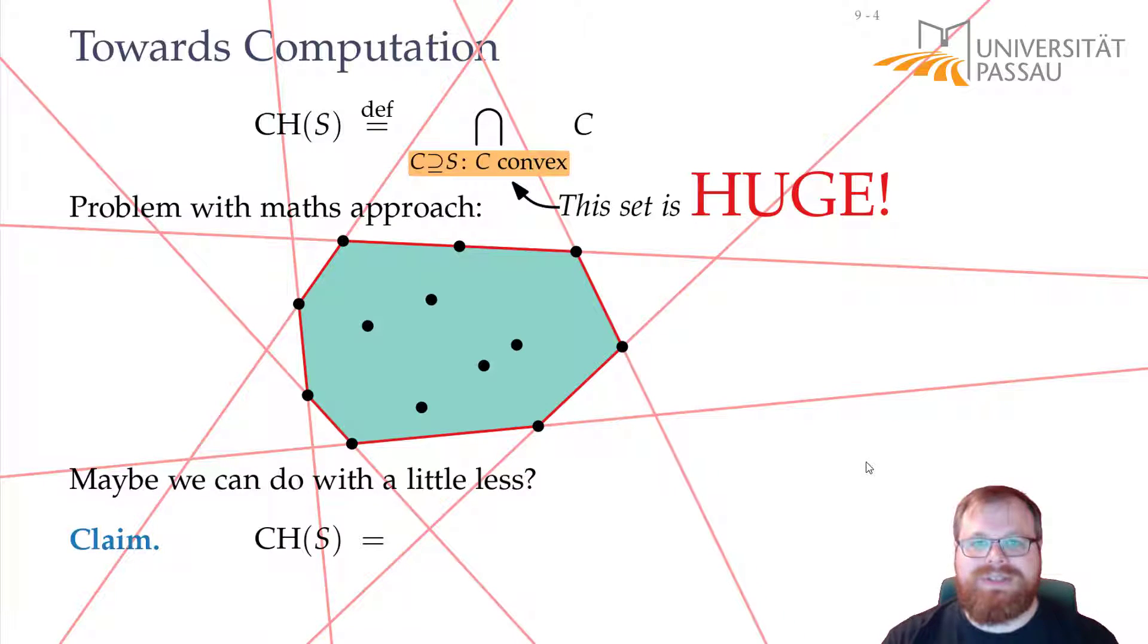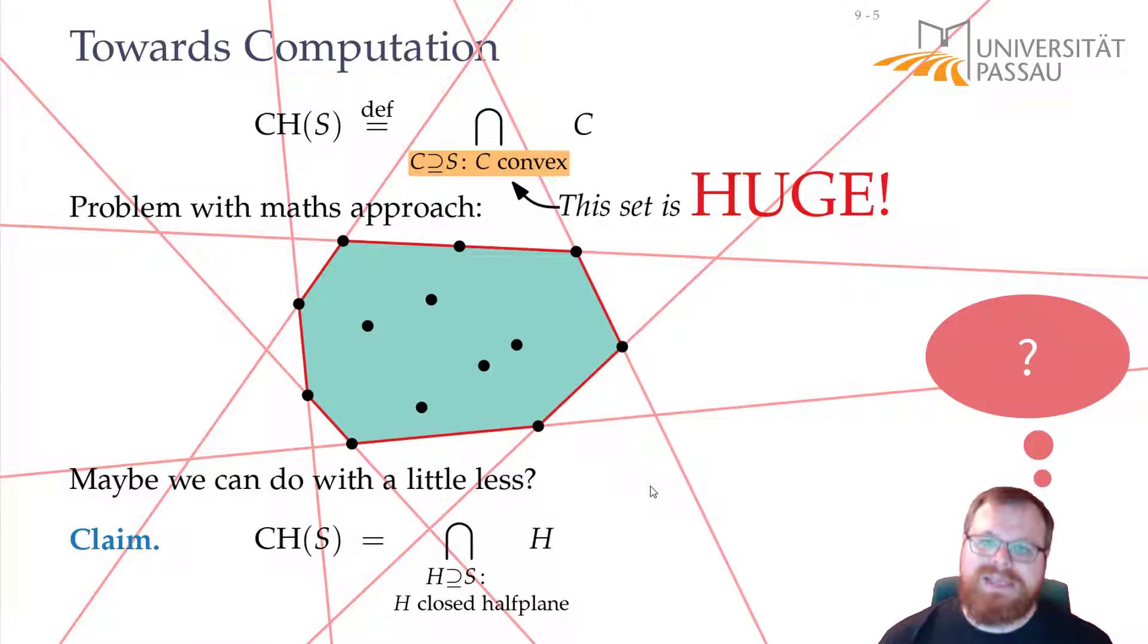So, in order to compute the convex hull of our input set, we might as well just look at the half planes that contain the input points, and not all the convex sets. This already reduces the number of sets that we have to compute by a lot. However, this is still too much. If we look at all closed half planes that contain our point set, that's still an infinite amount. So, what else can we use?